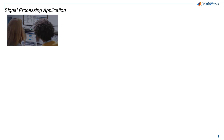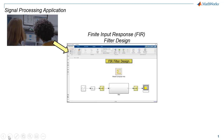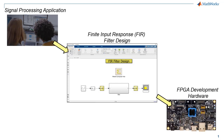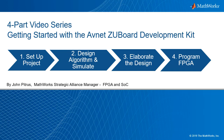Hello! How would you like to take a signal processing algorithm, such as a finite impulse response (FIR) filter, design it and simulate it on your PC, then deploy it to FPGA hardware? The same FPGA hardware is great for other applications like artificial intelligence, machine learning, robotics, or embedded processing. I'm John Petrus with MathWorks.